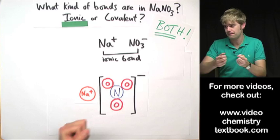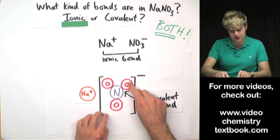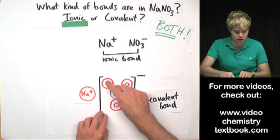That is covalent bonds. So for example there's a covalent bond between this O and the N here, holding them together. There's also a covalent bond here and a covalent bond here.